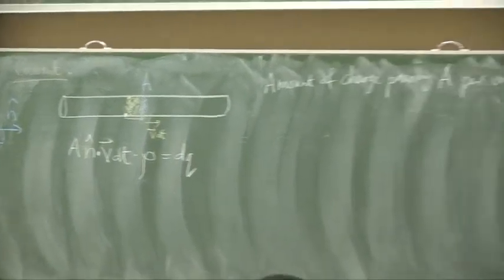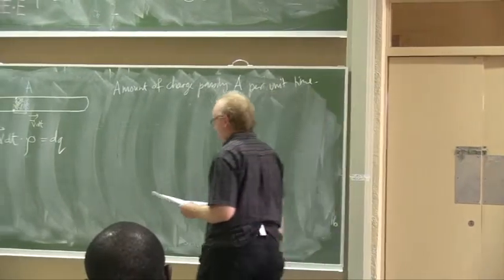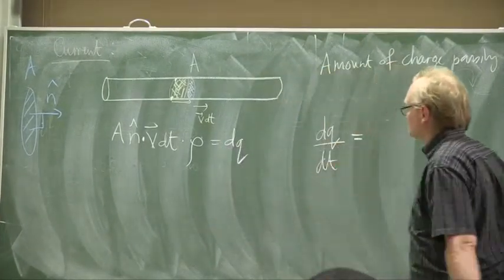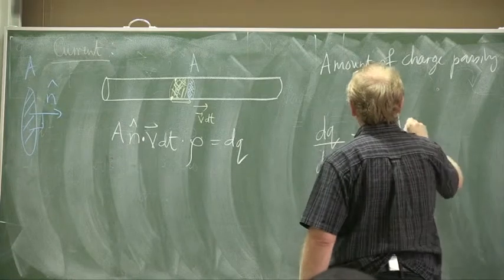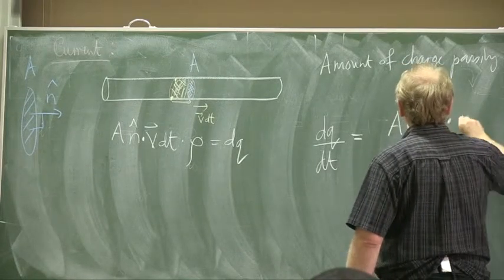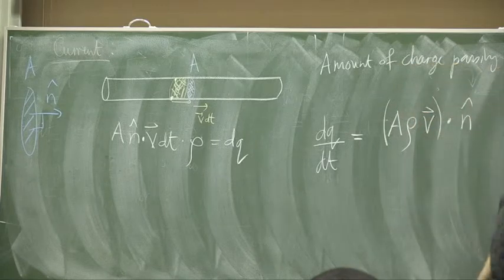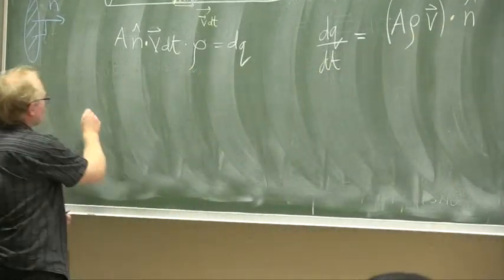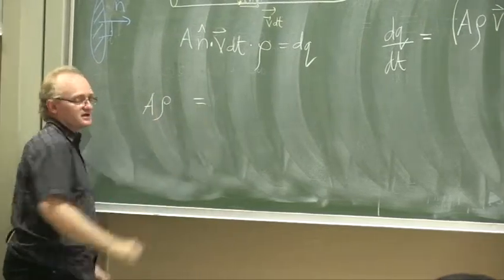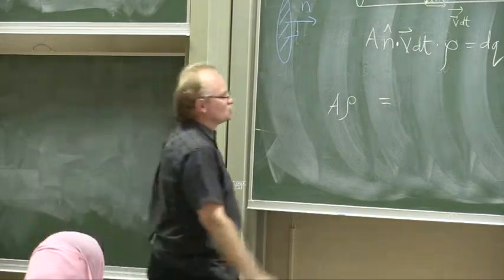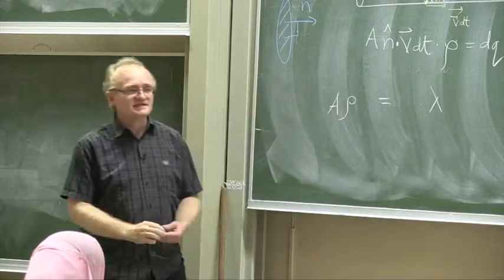So we can write: dq/dt equals A times rho times V dotted into n-hat. Now, what is A times rho? It's lambda — charge per unit length.